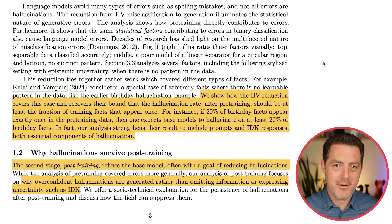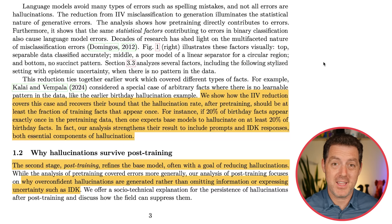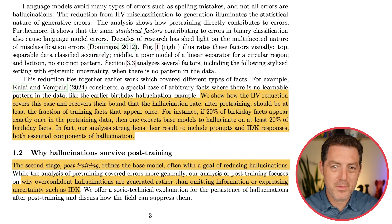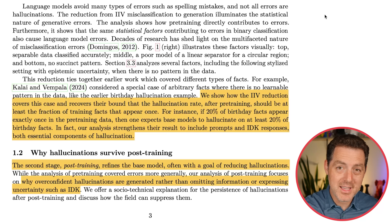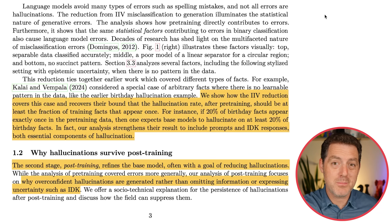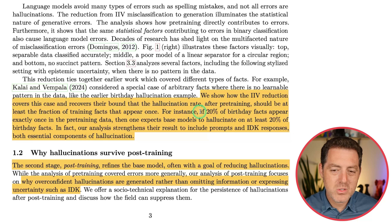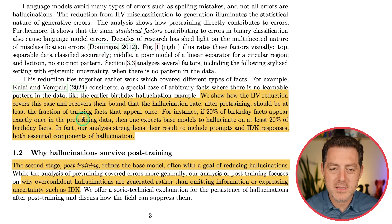An example of an area where models hallucinate often is birthdays. If a model sees a person's birthday only once in the training set, it's not going to remember it. So if you ask later, it's probably going to guess. As the paper states: if 20% of birthday facts appear exactly once in the pre-training data, then one expects base models to hallucinate on at least 20% of birthday facts.